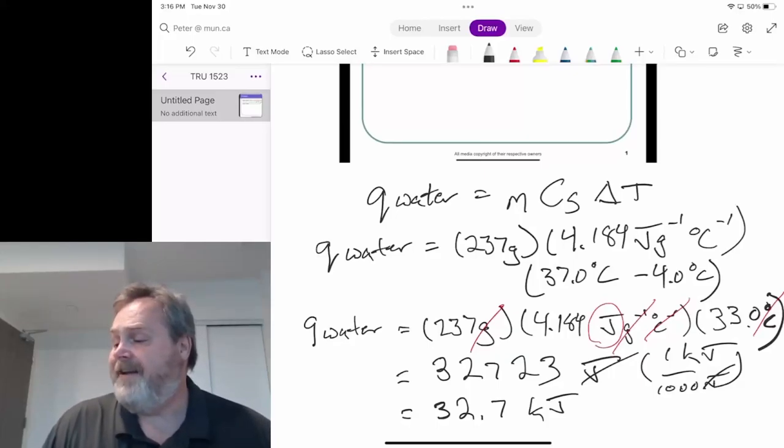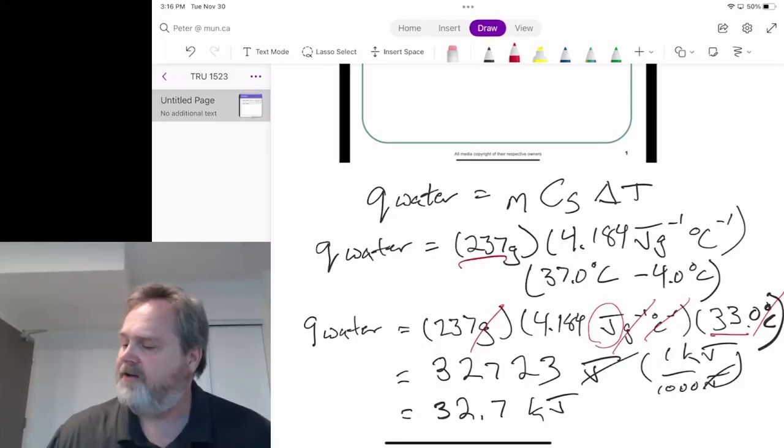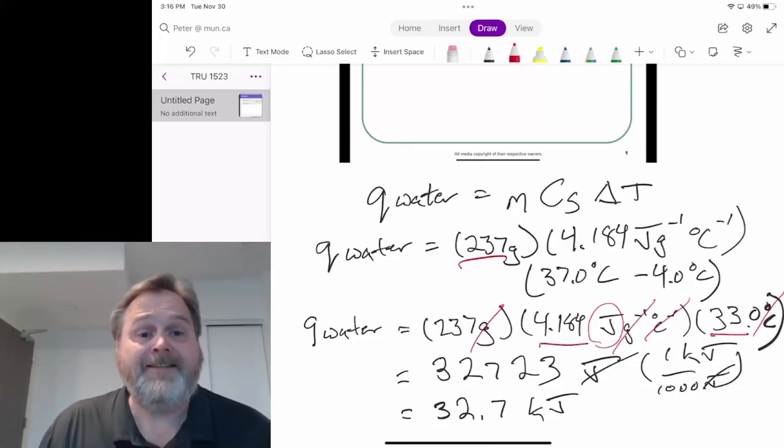And you'll notice that I've now taken it down to three sig figs, because effectively we see our mass has three sig figs, our temperature change has three sig figs, and our heat capacity has four. So we have to take it down to three because of the multiplication involved.